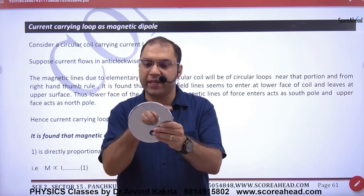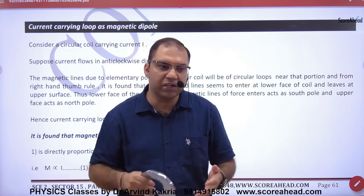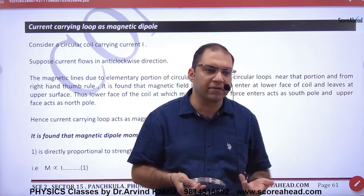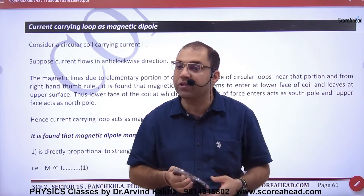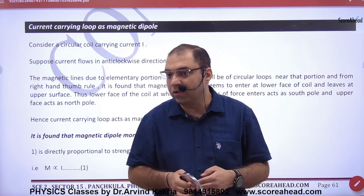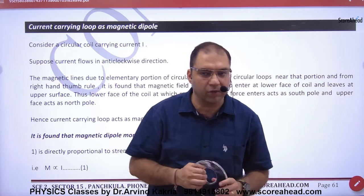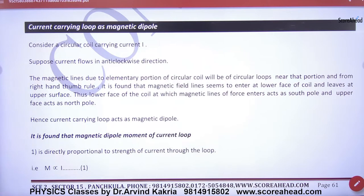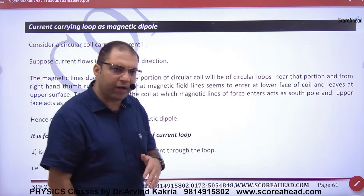If the direction of current is changed — anticlockwise — then the pole becomes north. The poles are not fixed; they are decided by the direction of current. These are imaginary poles; in reality you will not find physical poles. But because B is generated, we have to assign poles. The current-carrying loop is thus a magnetic dipole.